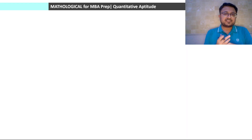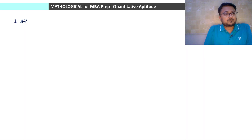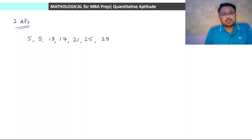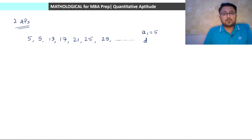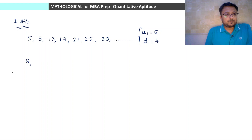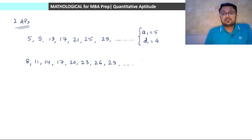One concept-based question from the previous session, let us look at it in a bit more detail. Let us say we have two arithmetic progressions. First AP: 5, 9, 13, 17, 21, 25, 29 and so on. First term a1 is equal to 5, common difference d1 is equal to 4. Second AP: 8, 11, 14, 17, 20, 23, 26, 29 and so on. Second AP's first term is 8 and common difference d2 is 3.